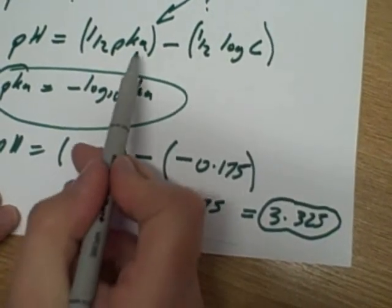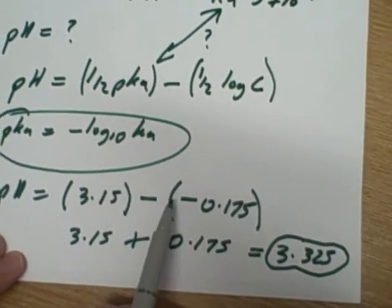The reason why we use brackets like this is to stop accidents from happening, because when we do this particular calculation, we'll end up minus in the minus, which of course becomes a plus.